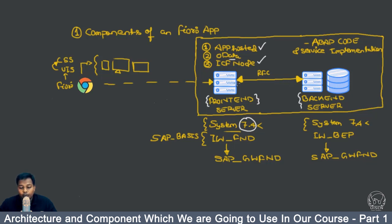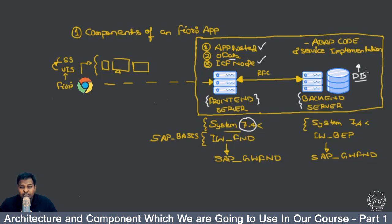The data that comes out from the OData is actually present in the back-end server. You are not doing any data operations directly from the front-end server to a database. This database can be your HANA database or any database where your ERP-specific data is stored. To extract data from a HANA database, you use views — CDS views, calculation views, analytical views, or attribute views — or direct database operations with procedures or SQL.